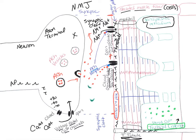The terminal cisternae stores calcium — all these calcium molecules are stored there, just waiting for an action potential to release them. The sarcoplasmic reticulum is wrapped around these myofibrils, so each myofibril will have its own sarcoplasmic reticulum wrapped around it. A myofibril is another organelle inside the skeletal muscle fiber. The myofibril is a protein, and inside that myofibril we have those contractile proteins called myosin and actin.